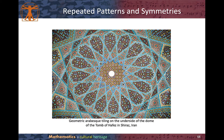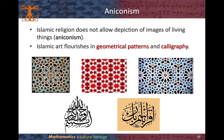The third part of the lecture is on repeated patterns and symmetries. We will start by looking at this geometric Arabic styling on the underside of the dome of the tomb of Hafiz in Shiraz, Iran. It is very common to see mosaic tilings in Persian architecture. Islamic religion does not allow the depiction of images of living things — this is what we call aniconism. Therefore, Islamic art forages in geometric patterns and calligraphy. We can see that in these mosaic tilings, there are quite a lot of repeated patterns.